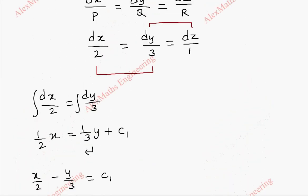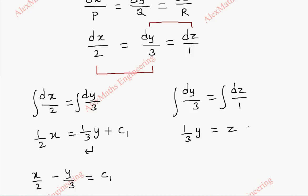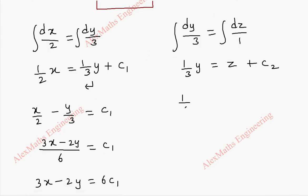In the same way, taking another two terms: dy by 3 equal to dz by 1. On integration we get 1 by 3 times y equal to z plus c2. Taking z to the other side: 1 by 3 times y minus z equal to c2. Taking LCM as 3, we get y minus 3z equal to c2.